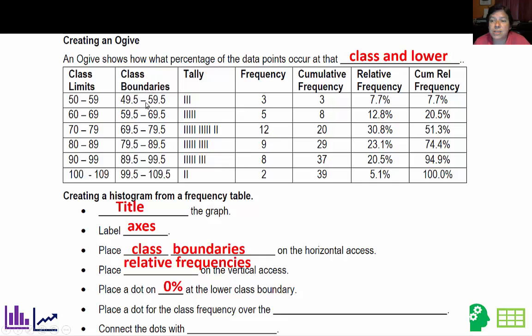Then we're going to use at the upper boundary, I'm going to put the dot at 7.7% because we're doing cumulative. And then at 69.5, I'm going to put a dot at 20.5. And at 79.5, I'll do 51.3, all the way until I get up to 100%. So place a dot for the class frequency over the next class boundary. So for this class, I put it over that boundary. Connect the dots with segments and you're pretty much done.